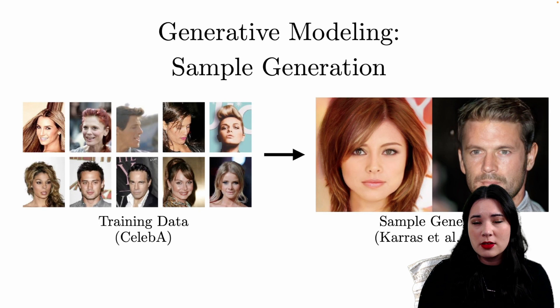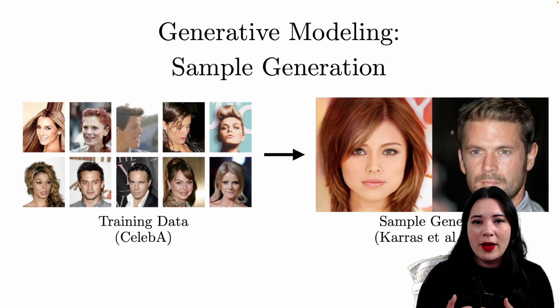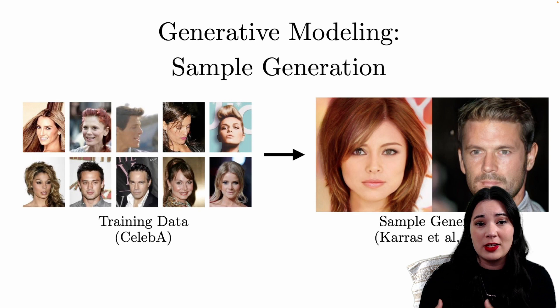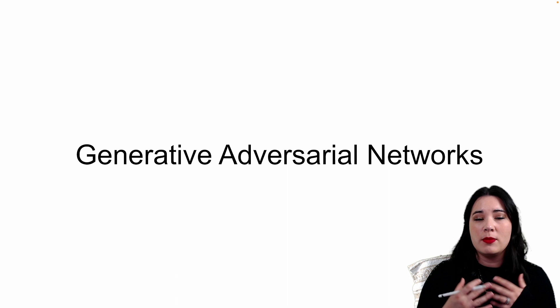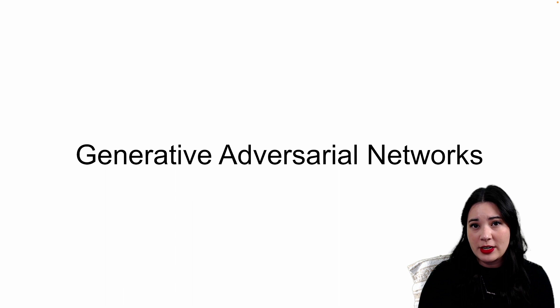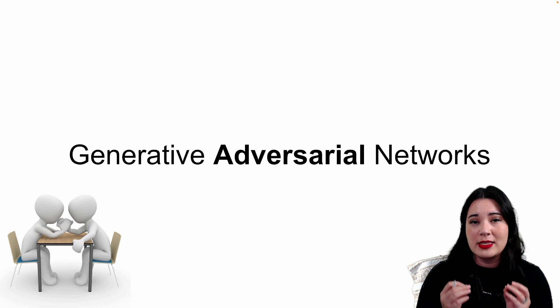Sample generation models still aim to generate new values, new images that look like the original input, but instead of doing this through explicit density estimation, we take training data and train some type of generator in order to create new samples. We reward this generator when it creates things that look like our training data, and we punish it when it doesn't. So let's talk about one of the most common types of sample generation models, the generative adversarial network, or GAN. One of the most important concepts behind a GAN is this adversarial part.